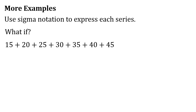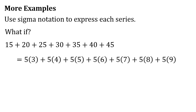What if the series is 15 plus 20 plus 25 plus 30 plus 35 plus 40 plus 45? These are also multiples of 5, but starting from 15, not 5. So we have 5×3, 5×4, 5×5, 5×6, 5×7, 5×8, and 5×9. The integers run from 3 to 9, so we can express this as the sum of 5n as n goes from 3 to 9.